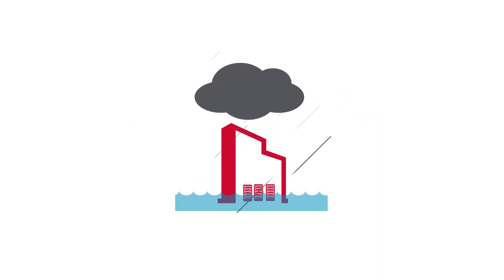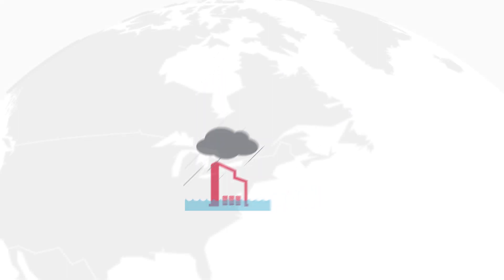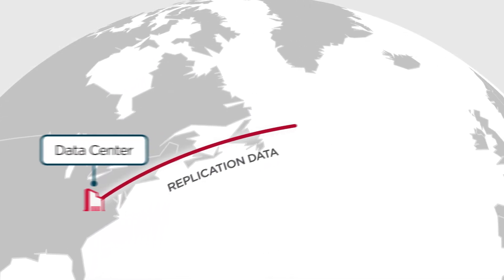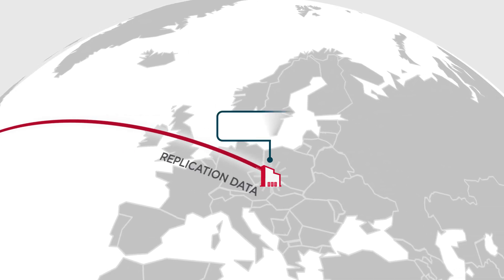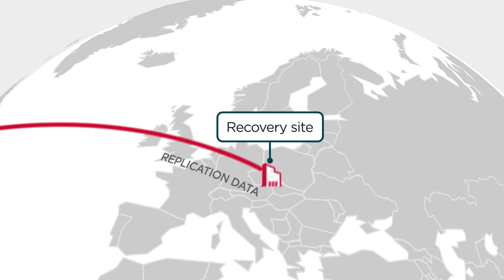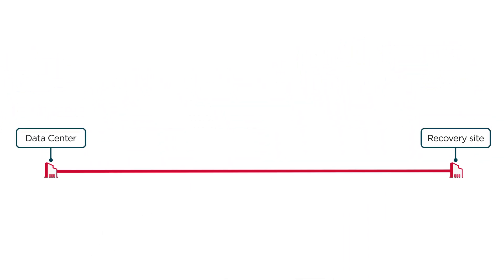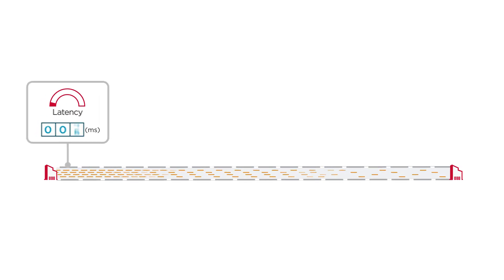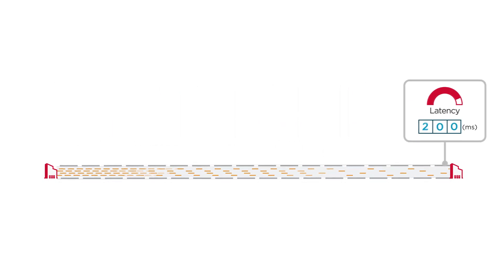Losing data can be catastrophic for any business. That's why your disaster recovery plan calls for replicating your valuable data somewhere far away. But the farther away the replication, the longer it takes to complete because of latency in the WAN.